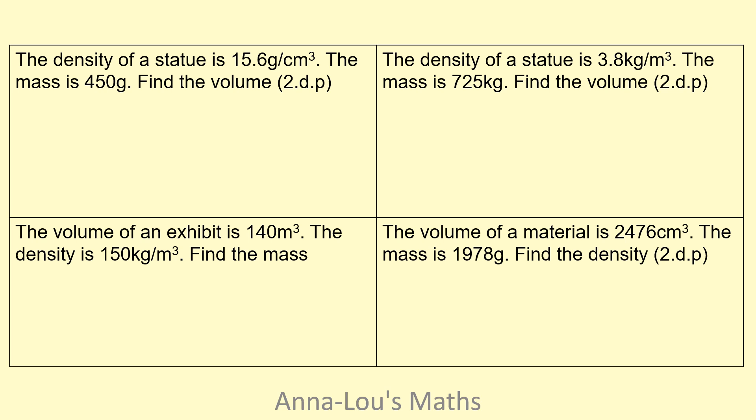Okay, let's have a look at these. So this first one, the density of a statue is 15.6 grams per centimeters cubed, and the mass is 450 grams. Find the volume. So they want this one to two decimal places.